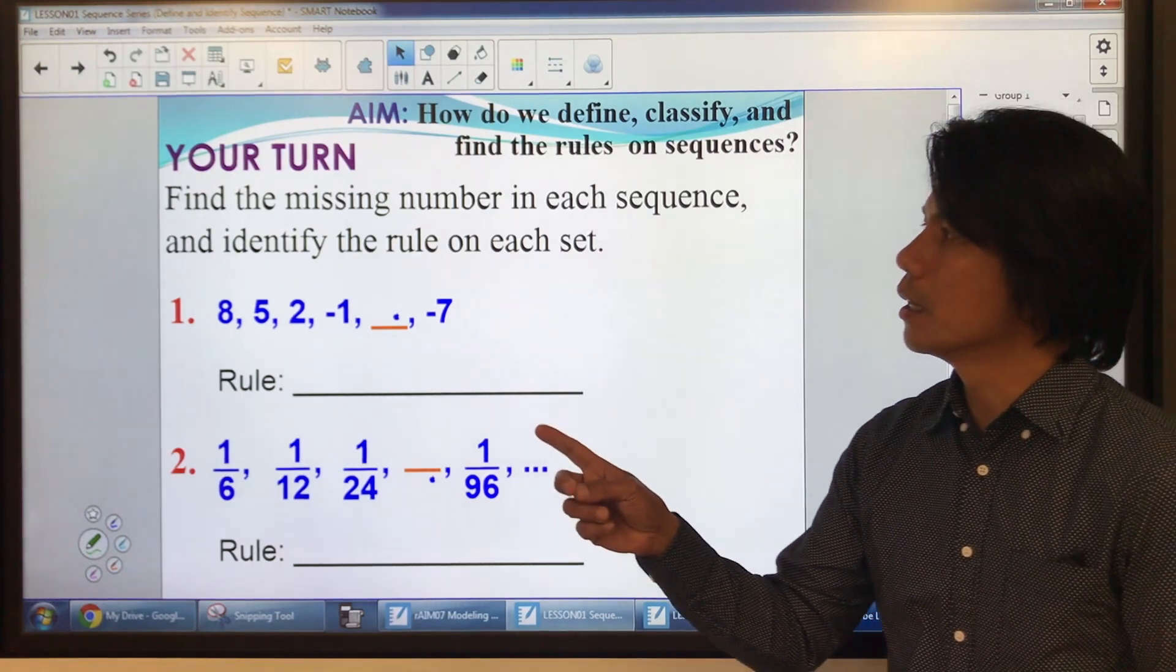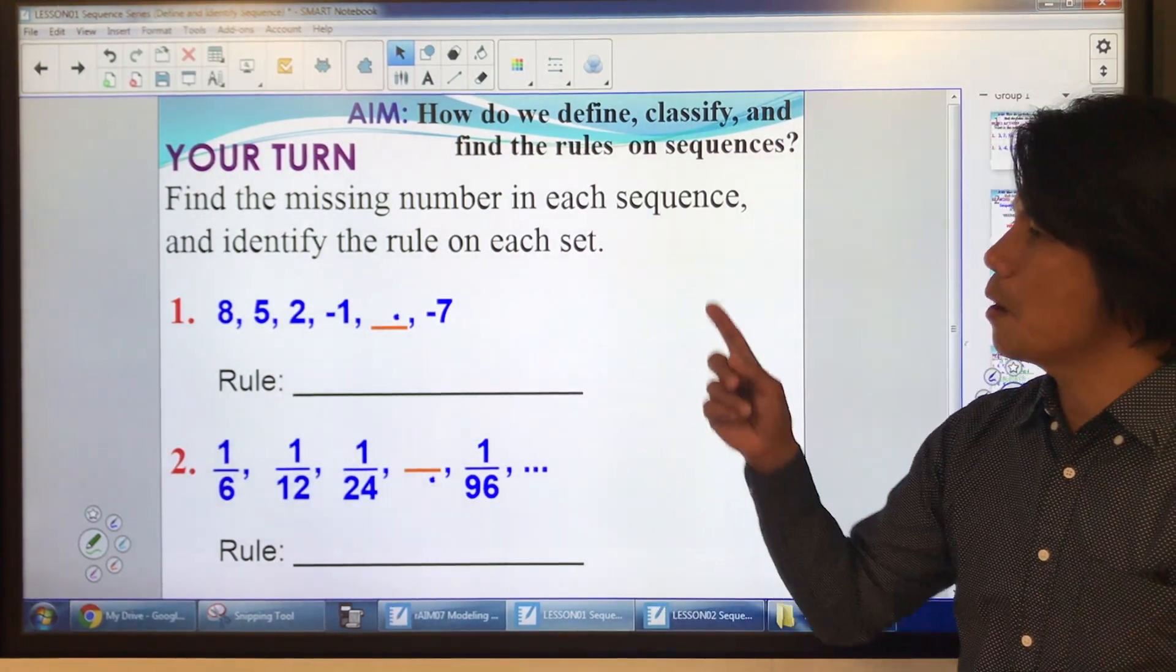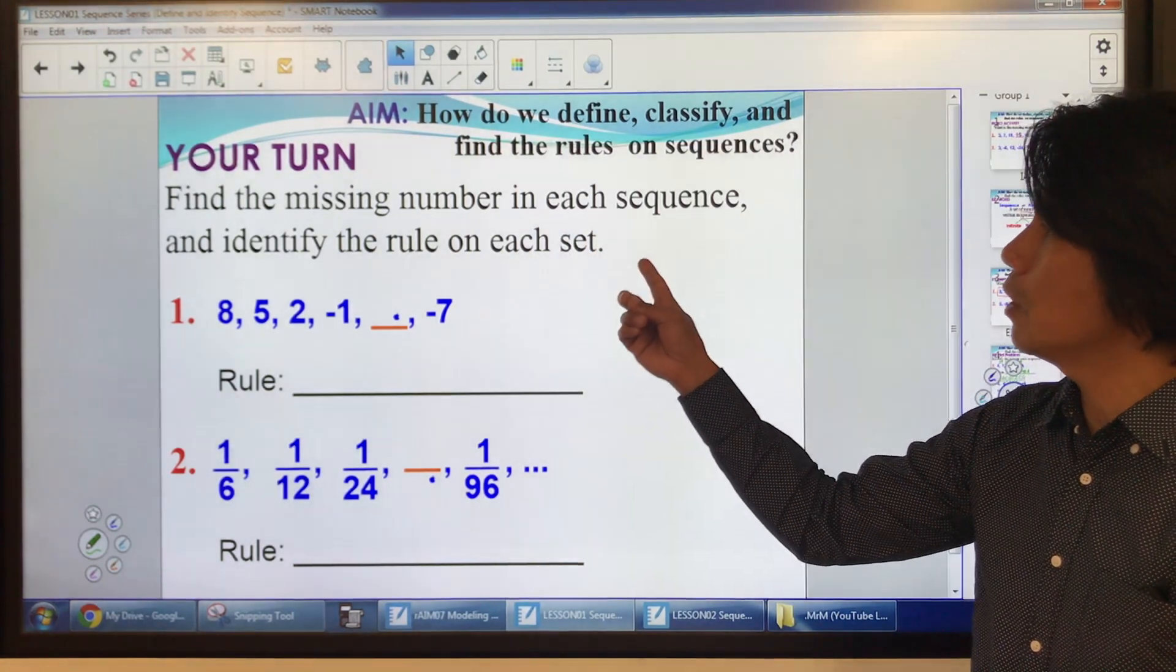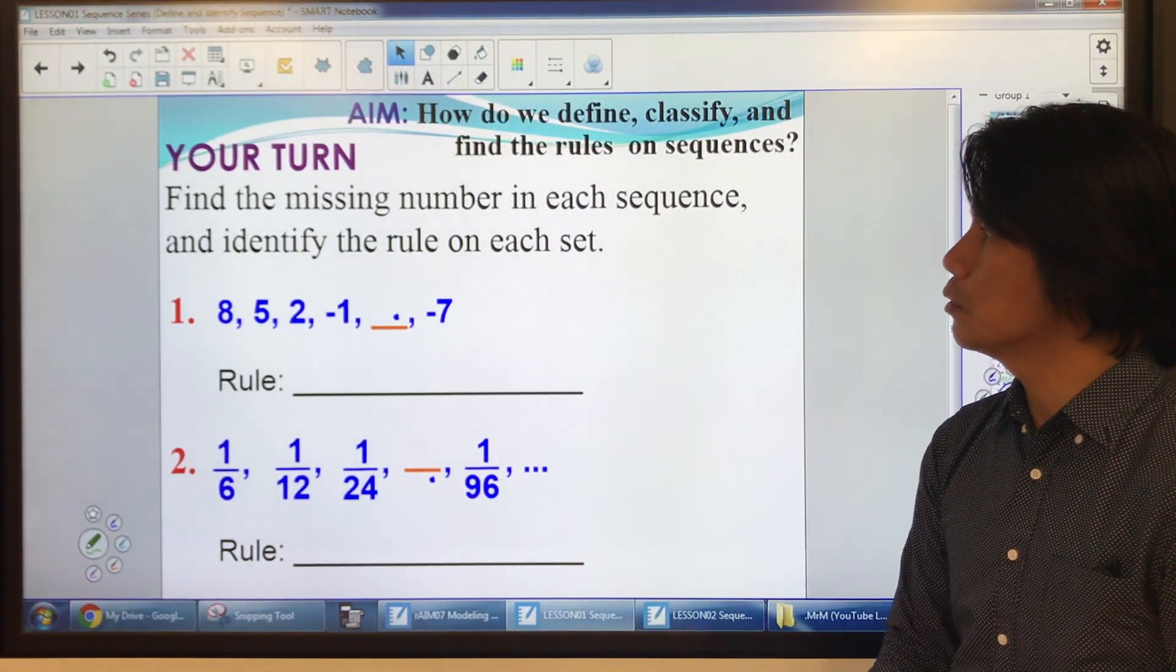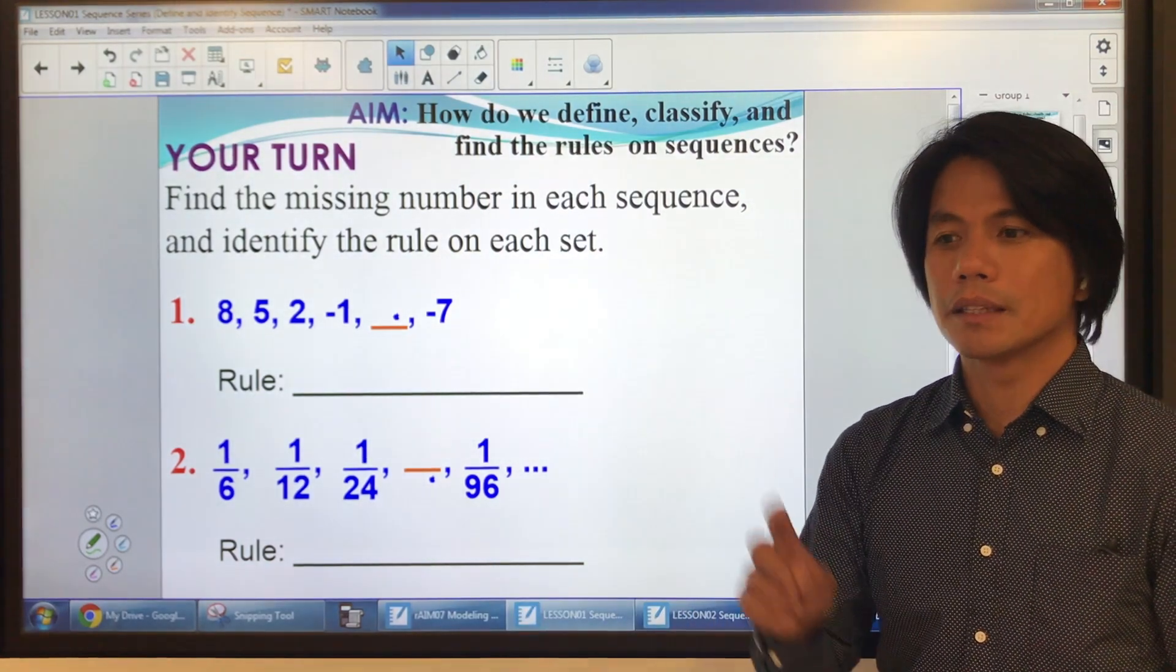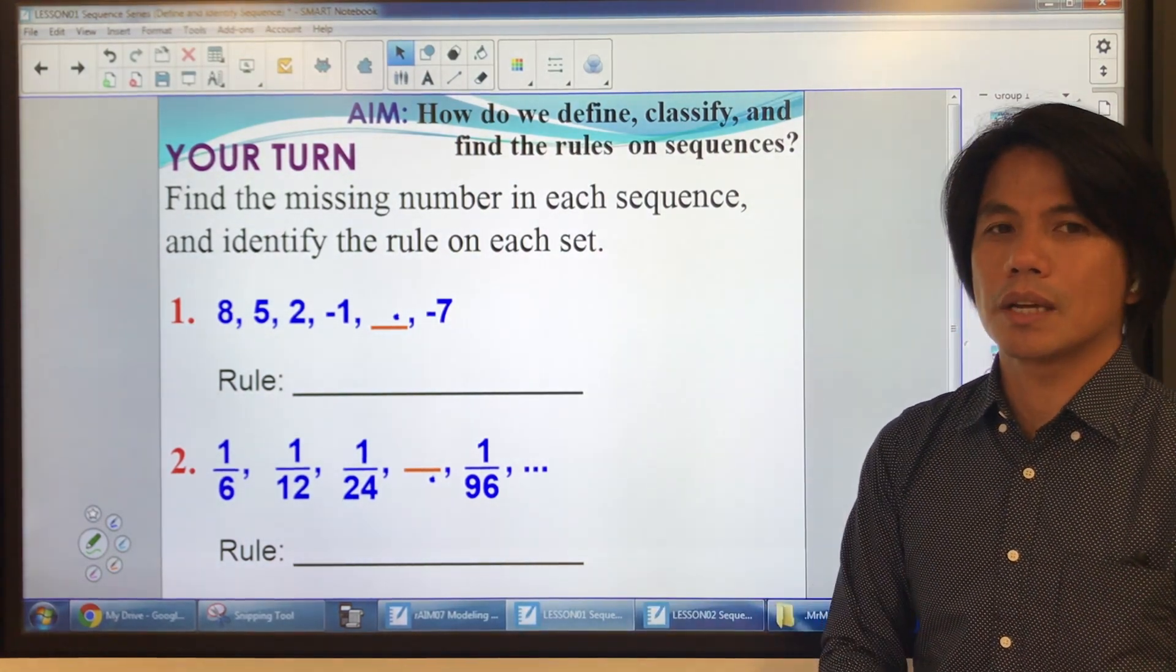Now it's your turn. So it's a combination of the intro and the model problem. Find the missing number in each sequence and identify the rule on each set. Make sure you pause your video while you're doing it. Come back once you're done so that you can check your answers.